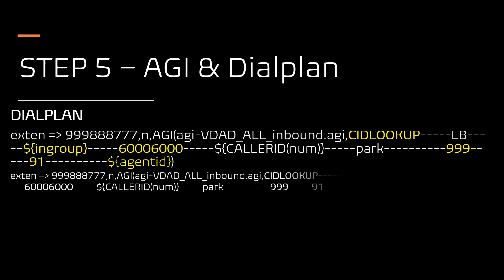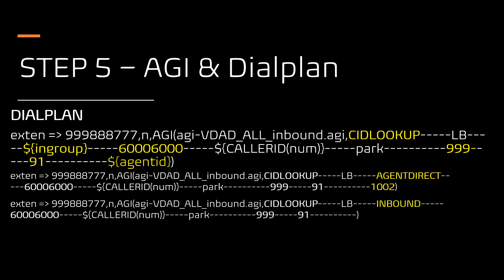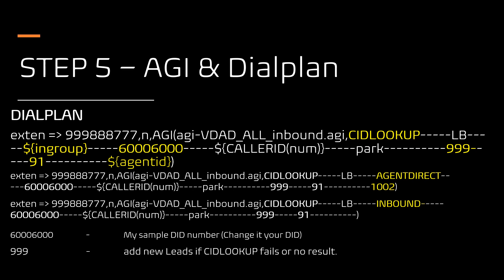As per this dial plan, if the user ID value returns a value, the call will be routed to the sticky agent via the Agent Direct in-group. If the user ID is empty, the caller will be routed to the default INBOUND in-group and land with any free agent in that in-group. Make sure to change the DID value (6000/6000) to your actual DID number, change the list ID (999) to your list ID, and change the country code (91) to your country code.